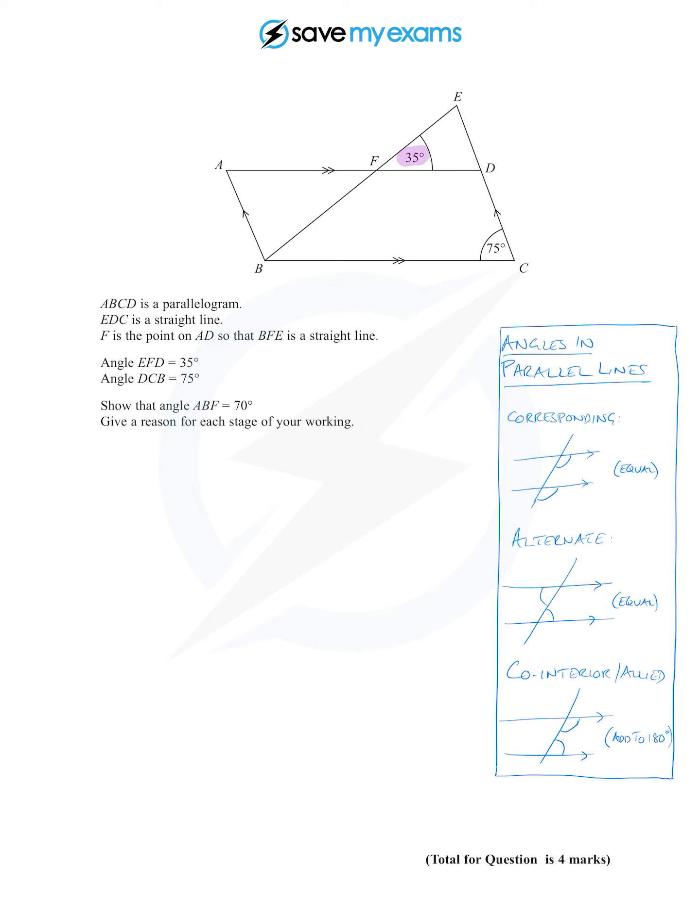So that's one good angle to find, we could find this angle. And in fact we can find this angle as well because of course that is allied to the 75. Look, there's the C that we're not allowed to talk about. That of course would give us ABF. So let's do that, see if we can recreate that working.